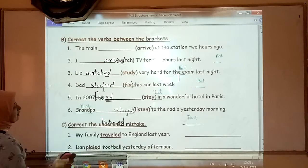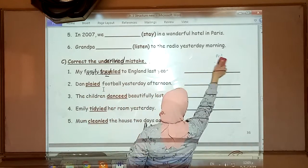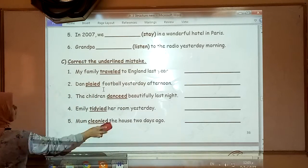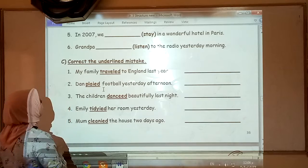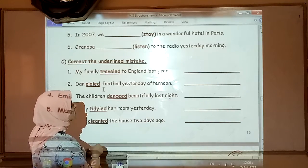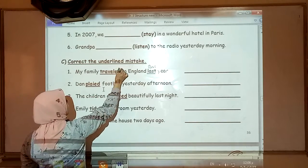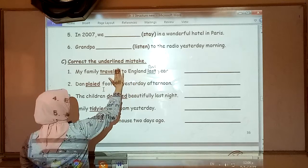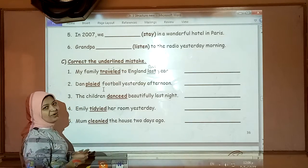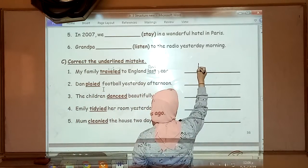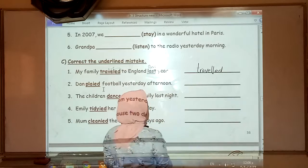Now, let's check the next exercise. Correct the underlined mistake. The verbs that are underlined, they are wrong. We must correct them. Number one. My family traveled to England last year. Last, past. Let's go to the verb. We have ED at the end of it. So, where is the problem? Put your hand on the ED and check the verb. You will find CVC. So, what should we do? Yes. Double the last letter.